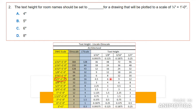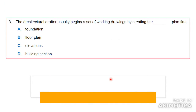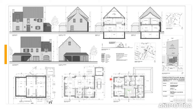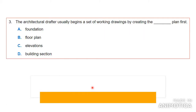Number three: the architectural drafter should usually begin a set of working drawings by creating which plan first — the foundation plan, the floor plan, elevations, or the building section? The first thing you usually do when creating a set of drawings is the floor plan. These two drawings are examples of the floor plan. It shows you the layout of the building, and after you've drawn the floor plans you can draw the other drawings from it.